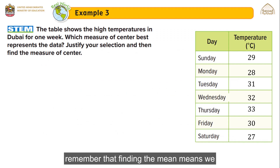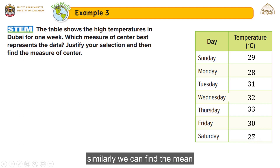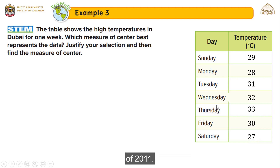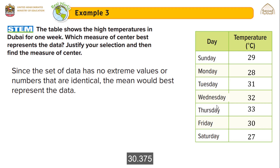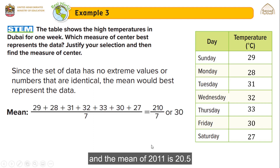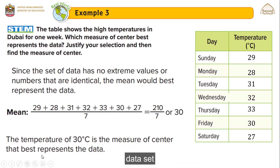Example 3: The table shows the high temperature in Dubai for one week. Which measure of center best represents the data? Justify your selection and then find the measure of center. We can see that the minimum value is 27 and the maximum value is 33, so there are no extreme values. Since the data has no extreme values or identical numbers, the mean would best represent the data. Finding the mean gives us 30 degrees, which is the measure of center that best represents the data.